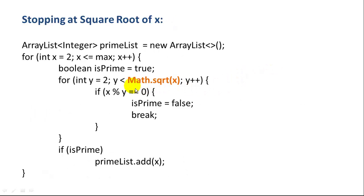And nicely, it's very simple to implement this change. We don't say y is less than x. We say y is less than math dot square root of x. So it's a very simple change to give us a huge improvement in performance in our program.